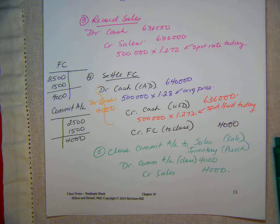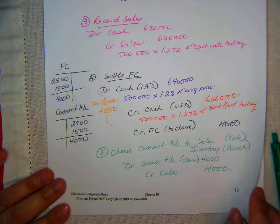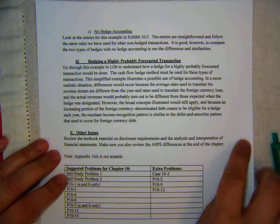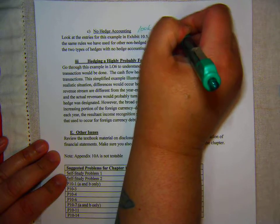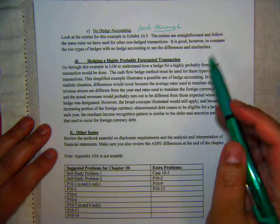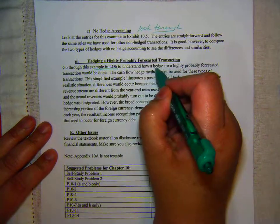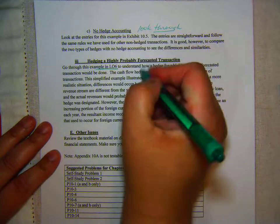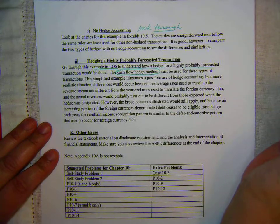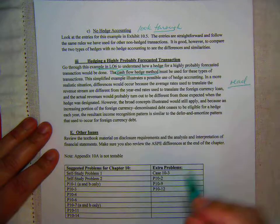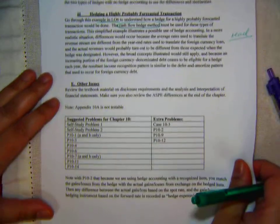And that is the fair value hedge. Just to finish this chapter, you can look through the no hedge accounting section and go through that example to see how a hedge for a highly probable forecasted transaction works — notice we use the cash method — and you can just read all of that. It's not critical for this.